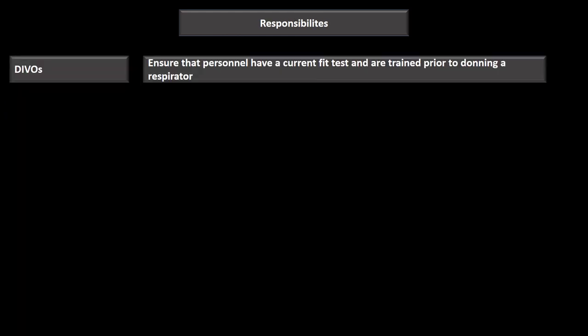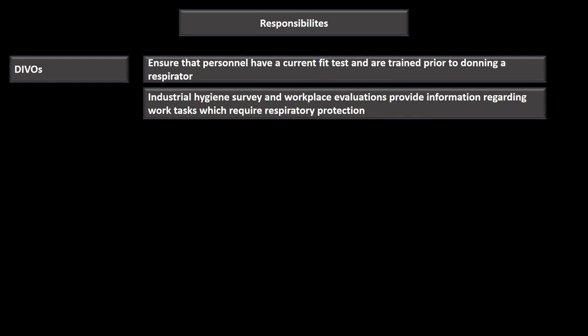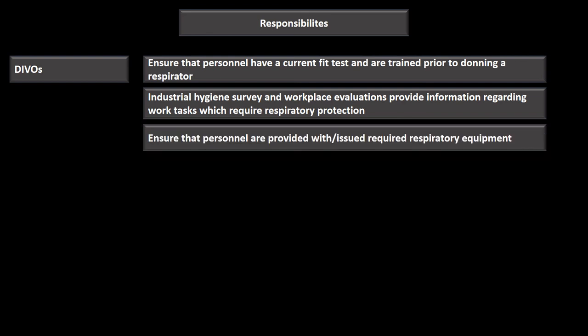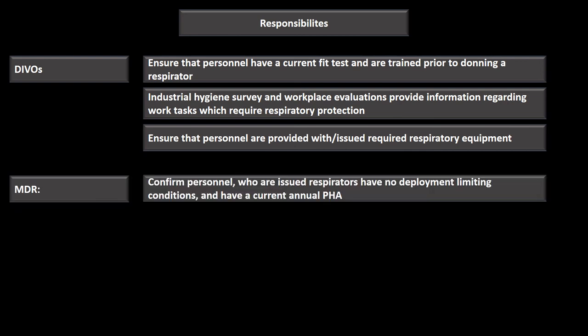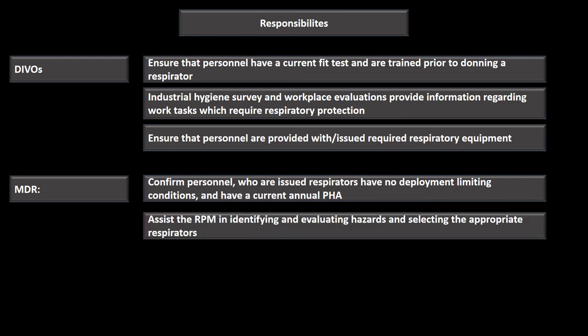Division officers must ensure personnel have current fit testing before donning respirators and review industrial hygiene surveys and workplace evaluations to identify tasks requiring respiratory protection. The medical department representative confirms that personnel issued respirators have no deployment-limiting conditions and have a current annual PHA — no special physical is required. Medical also assists the RPM in identifying hazards and selecting appropriate respirators.